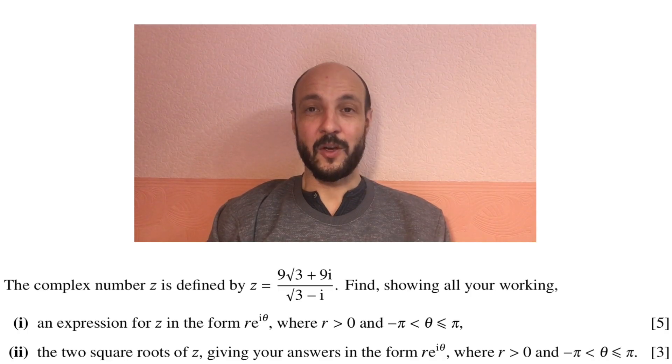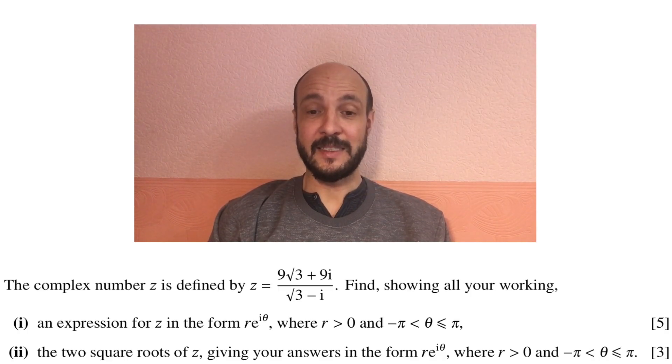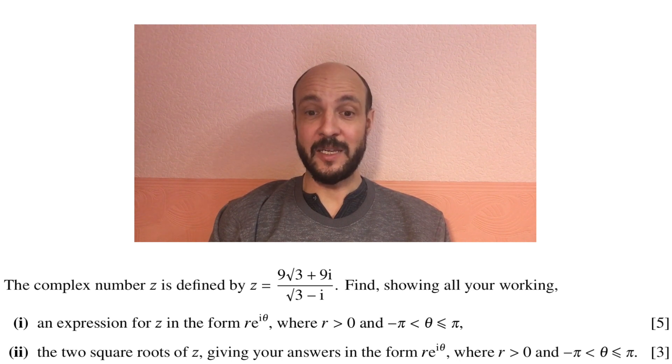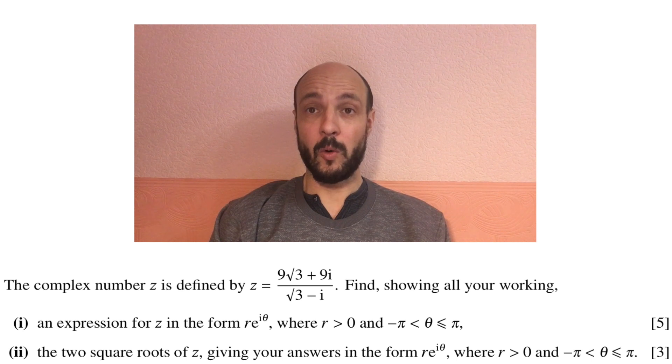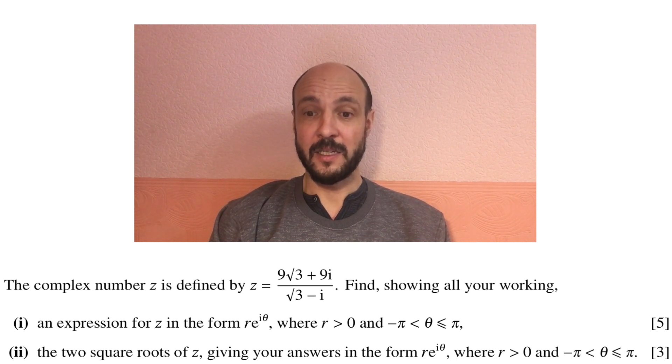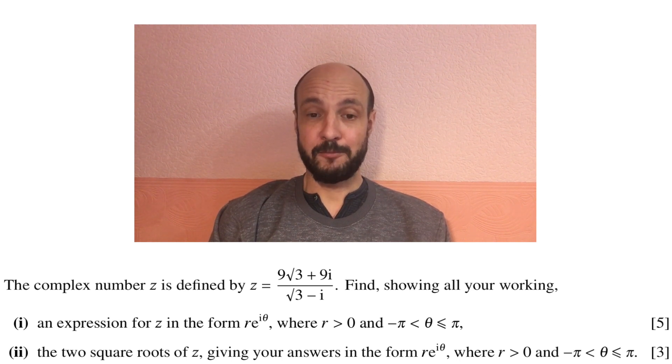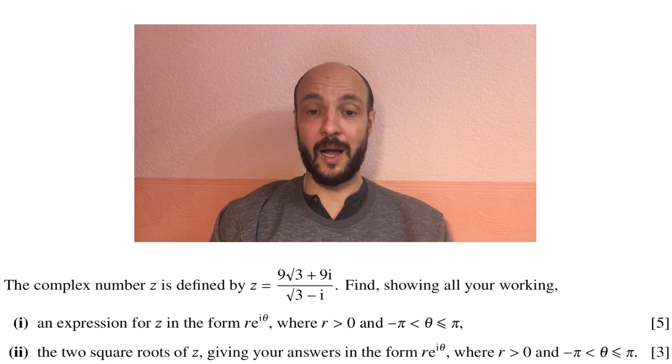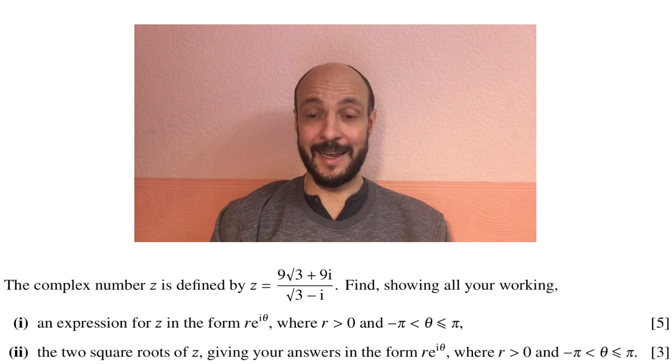I'll start by reading through the question. The complex number z is defined by z equals 9√3 + 9i all over √3 - i. Find, showing all your working, an expression for z in the form re^(iθ), where r > 0 and -π < θ ≤ π.